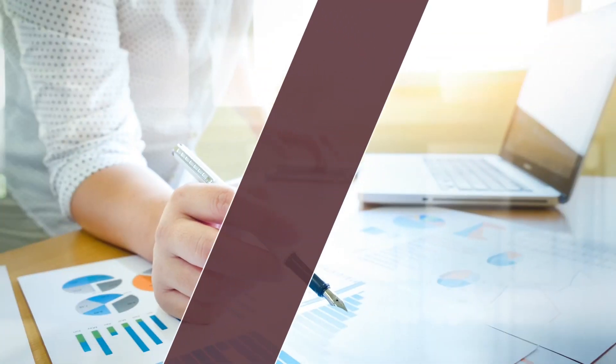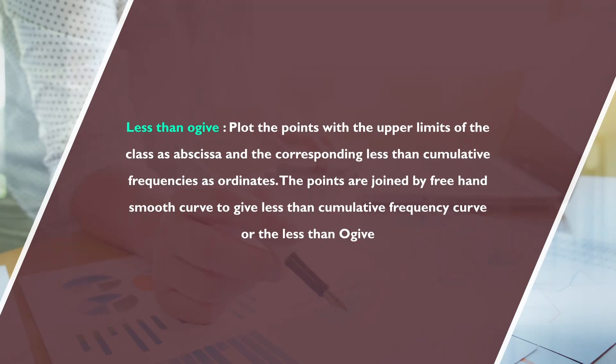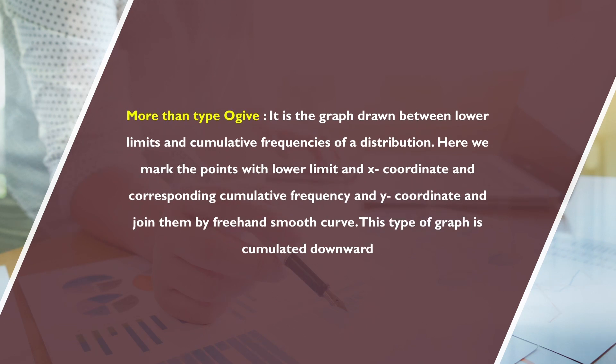In a less than ogive, frequencies are added starting from the upper limit of each class interval, and the cumulative total tends to increase. The less than ogive plots points with upper limits of the class as abscissa and corresponding less than cumulative frequencies as ordinates, joined by a freehand smooth curve. For the more than type ogive, the graph is drawn from lower limits and cumulative frequencies, joined by a freehand smooth curve, and this type of graph accumulates in a downward direction.